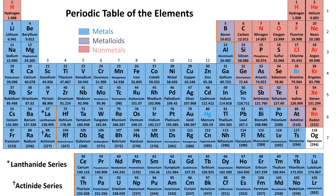I did leave one element unshaded — element number 118. This element has only recently been discovered, and as I was doing research on it, since it's right where metals, metalloids, and nonmetals come together, there are some calculations that indicate it might actually be a metal. Since nobody has prepared enough of it and its most stable isotope doesn't last very long, we just really don't know yet. It will be interesting to watch over the next few years to see whether element 118 is classified as a metal or a nonmetal.